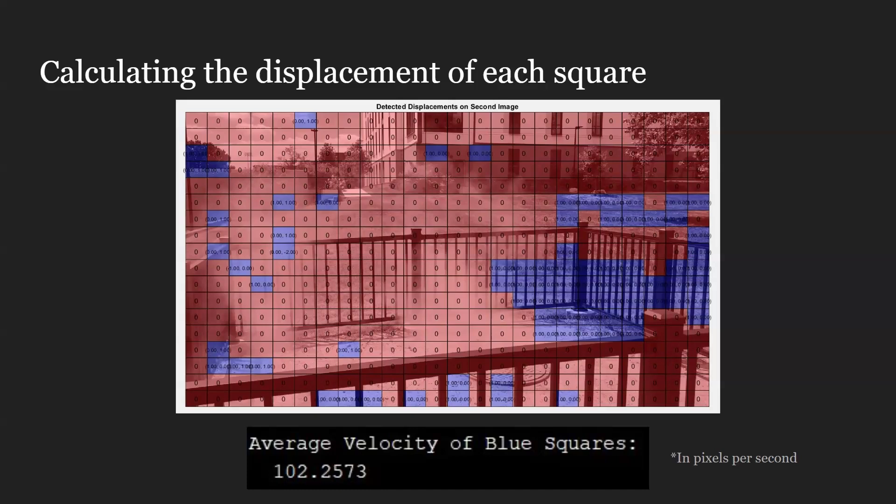Then we take all of the blue square velocity values and average them out. We get an average velocity of blue squares of 102.2573 in pixels per second. That would be our velocity for the steam.